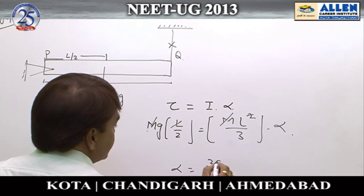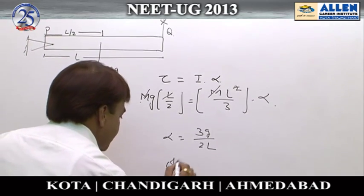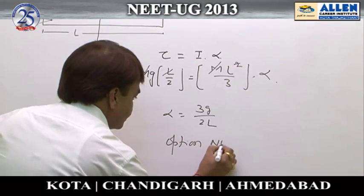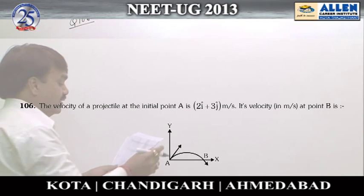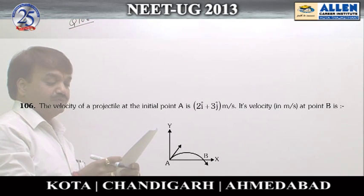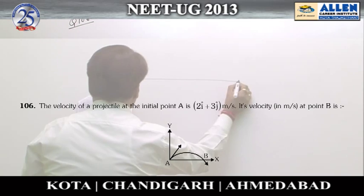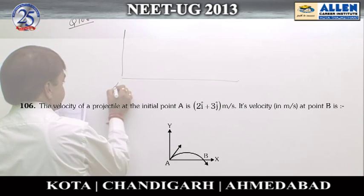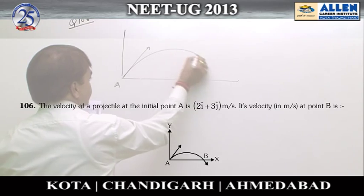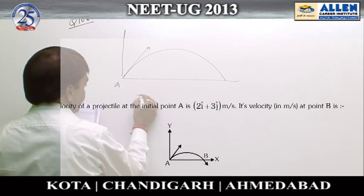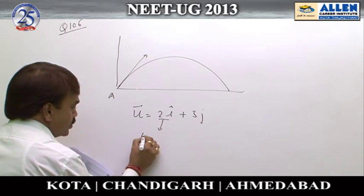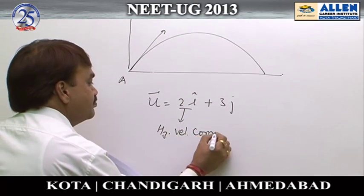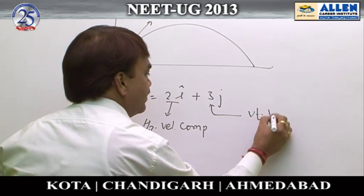The answer is 3g/2L, option number 2. Question number 106: the velocity of a projectile at initial point A is given as 2i-cap plus 3j-cap. So the initial velocity vector u = 2i + 3j, where 2i is the horizontal velocity component and 3j is the vertical velocity component.